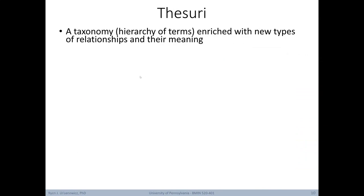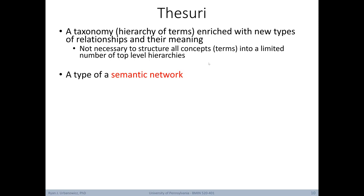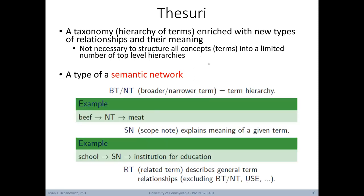Next, a closer look at thesauri. This is basically a taxonomy or hierarchy of terms, but they're enriched with new types of relationships and their meanings. Here, it's not necessary to structure all concepts or terms into a limited number of top-level hierarchies. In other words, the thesauri could be arranged as a set of distinct, independent hierarchies. You can think of a thesauri as a type of semantic network. They can include relationships between classes and superclasses or subclasses using the is-a relationships, but they can also lay out a number of other relationships.